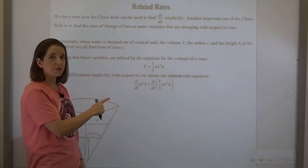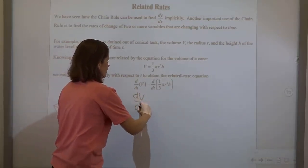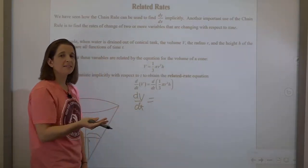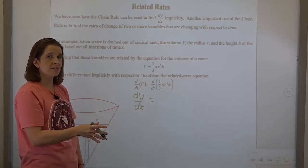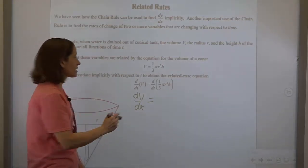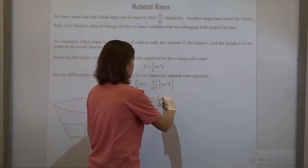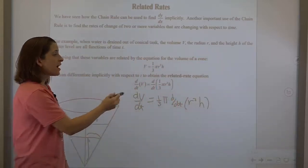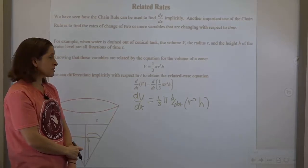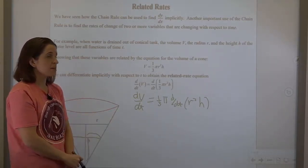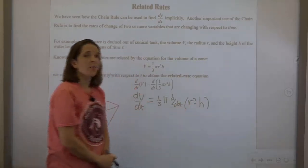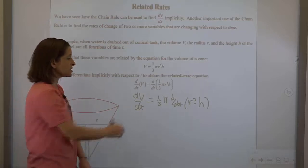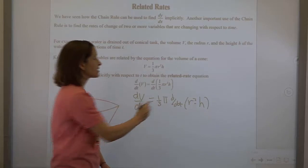To relate what's happening as the liquid drains out of the cone, we use the volume of a cone formula and differentiate implicitly on both sides. We have to remember that v, r, and h are all changing with respect to time. The derivative of v with respect to t is dv/dt. On the right-hand side, one-third and pi are constants. Since r and h are both functions of t, this is actually a product rule problem.